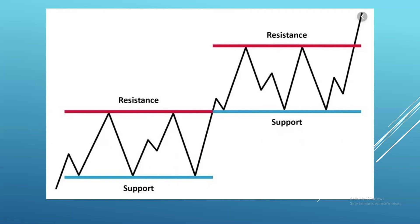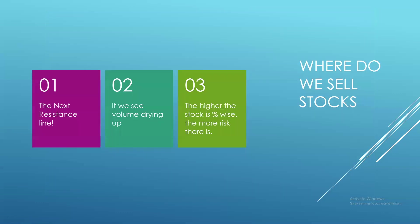We can hold the stock until the next resistance line, which is very important to understand. Volume drying up is something you'll see on the level two — a lack of bids and activity coming through. If people aren't excited about the play anymore, it's going to start turning. Stocks spike and rip the most when there's the most excitement and momentum. When that fades, stocks start falling.